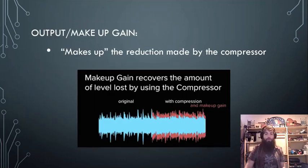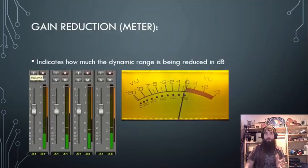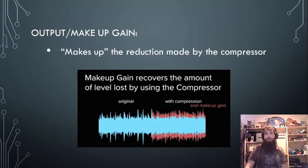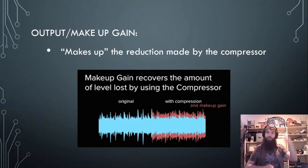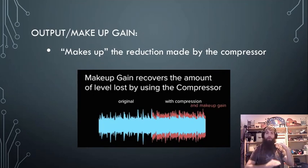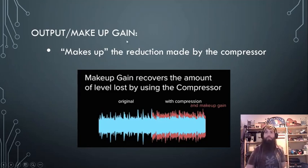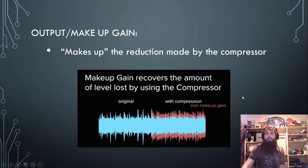Once you've started compressing the signal and you watch your gain reduction — whether that's negative 3 or negative 5 — you typically want to make up that gain. Makeup gain is where that comes into play. It effectively makes up the reduction made by the compressor.